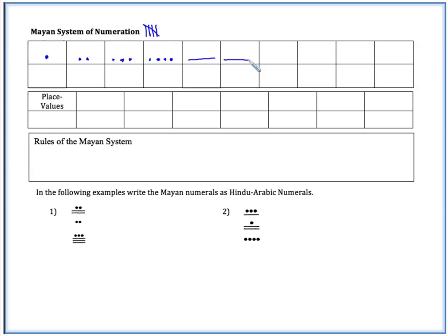And then continue on. So 6 would be a bar with a dot on top. 7, a bar with 2 dots. 8, a bar with 3 dots. 9, a bar with 4 dots. And then for 10, same as with our tallies, now they would get 2 bars. And this would continue on.